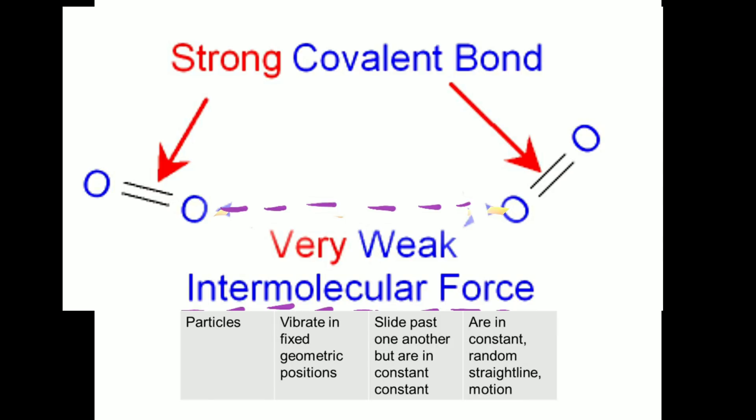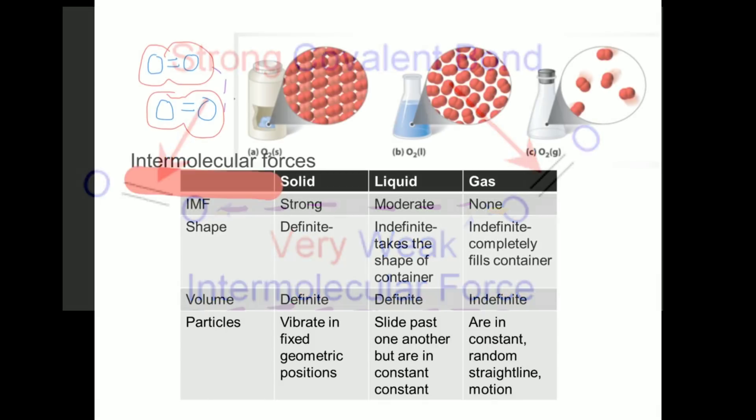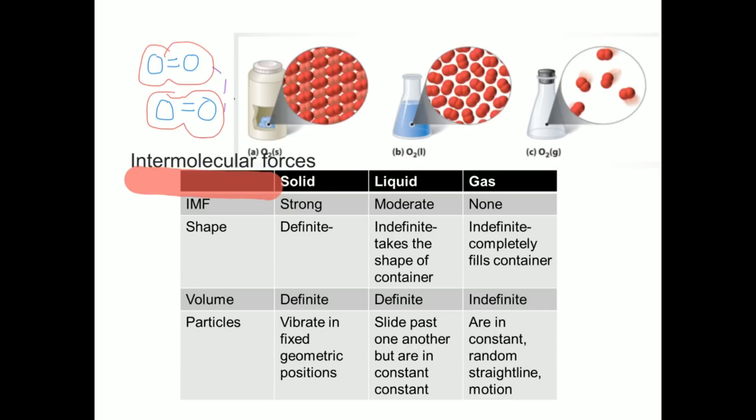Intermolecular forces in solids are really strong. That makes it so the particles, although moving because they have kinetic energy, vibrate in a fixed position. They are held so tightly together that the particles always have a definite shape and a definite volume. If you put an ice cube in a glass, the ice will maintain its own shape.